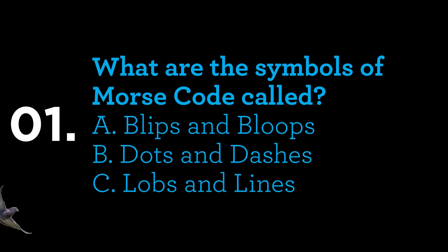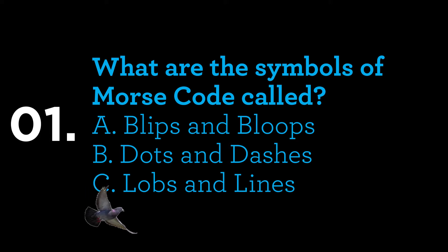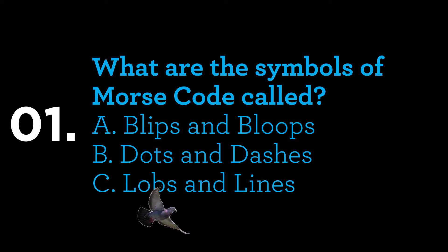What are the symbols of Morse code called? A. Blips and Bloops. B. Dots and Dashes. Or C. Lobs and Lines.